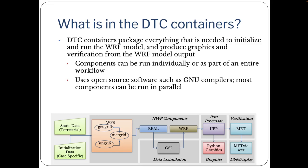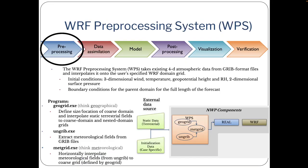In the following slides, we'll take a quick look at each of these components. The first component is the WARF preprocessing, or WPS, which is used for the preprocessing step. WPS takes existing 4D atmospheric data from GRIB format files and interpolates it onto the user's specified WARF domain grid. There are three programs: GeoGrid, UNGRIB, and METGrid.